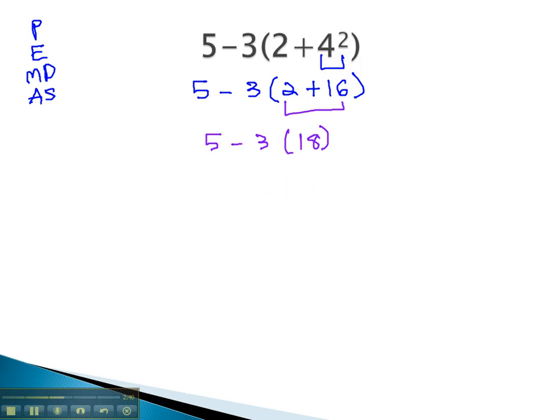Finally, we can subtract...whoops, which is negative 54. Finally, we can subtract to finish out the problem, 5 minus 54, which is negative 49. And that completes the problem.